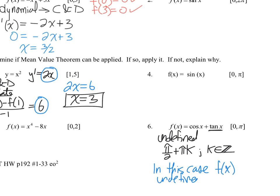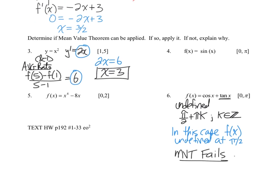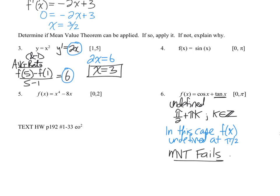In this case, f of x is undefined at pi over two. Because pi over two, where in that last problem it didn't fall in the interval of negative pi over six to pi over three, now it does fall in the interval of zero to pi. So we have a vertical asymptote, an infinite discontinuity right smack dab in the middle of this interval, which is going to cause us to exclude the mean value theorem as a possibility. So MVT fails.